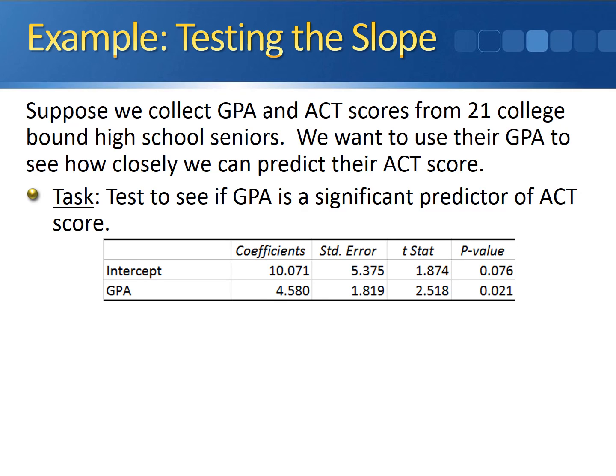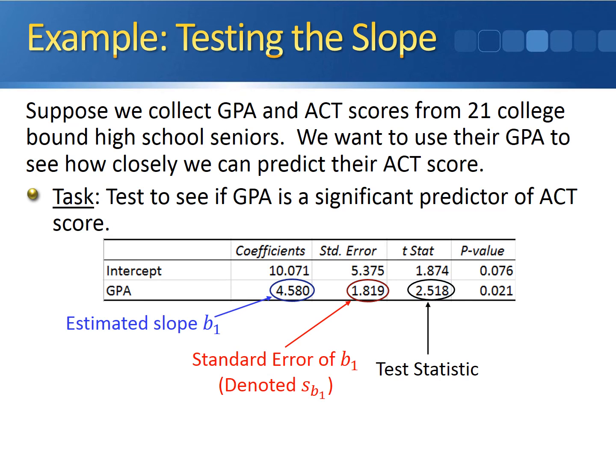For the coefficient column, the 4.58 represents our estimated slope. In the next column over, we have the standard error of the slope, denoted S sub B1. The next column is the test statistic for testing the slope. And the final column is the p-value corresponding to the test statistic.